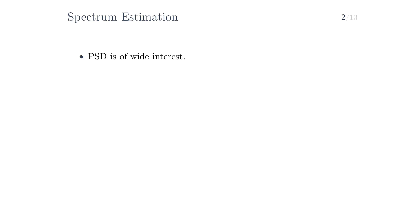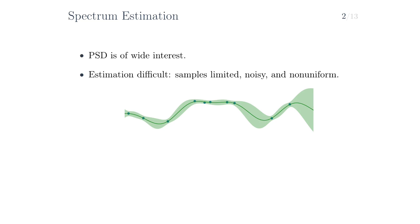But its estimation is often difficult, because samples of the underlying function are limited, noisy, and often sampled at points spaced non-uniformly in time. Consider, for example, the dataset shown below in the figure, where the data points are depicted by the blue dots.